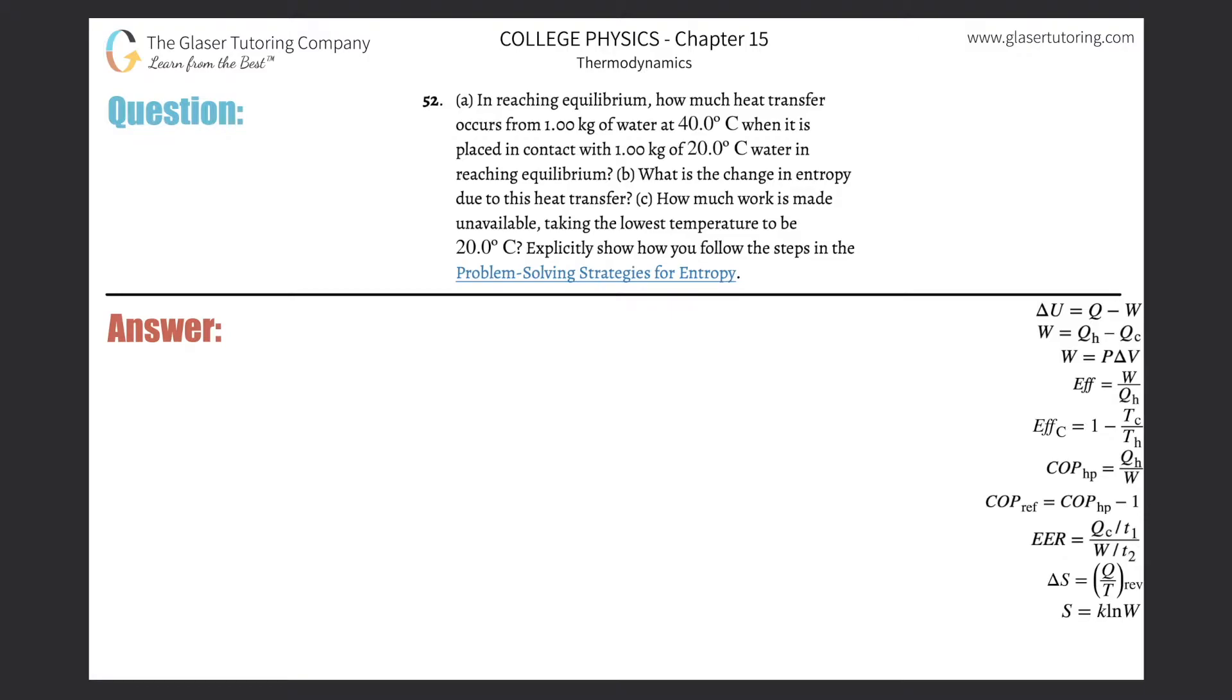Number 52. In reaching equilibrium, how much heat transfer occurs from one kilogram of water at 40 degrees Celsius when it is placed in contact with one kilogram of 20 degrees Celsius water in reaching equilibrium? So for letter A, this is going back to a concept we've studied before, heat transfer.